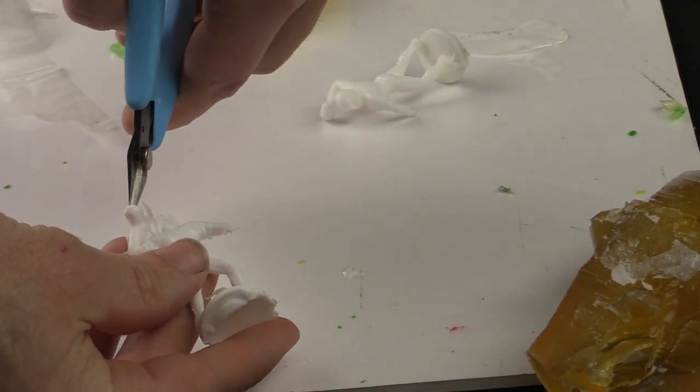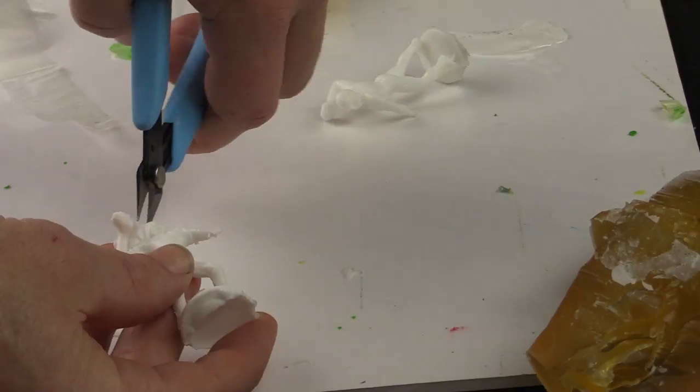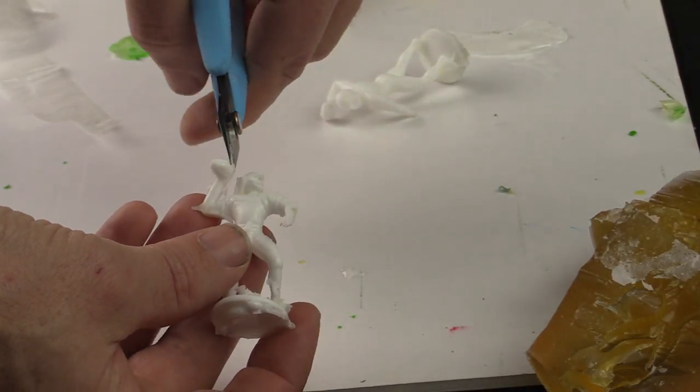We then clean up the extra plastic by cutting away the extra material. These clippers from Xuron are handy for this as well as an X-Acto knife.